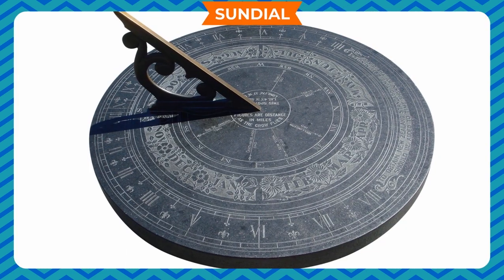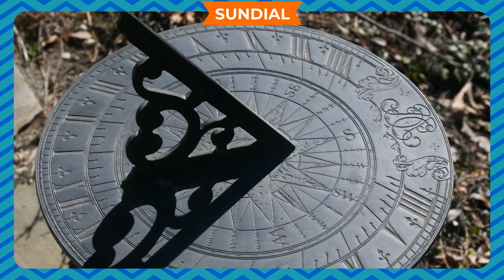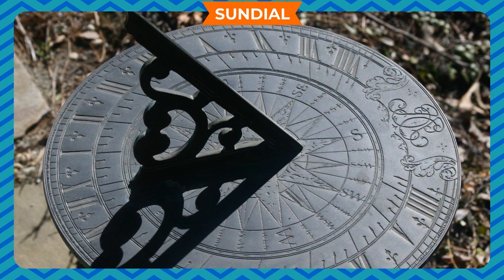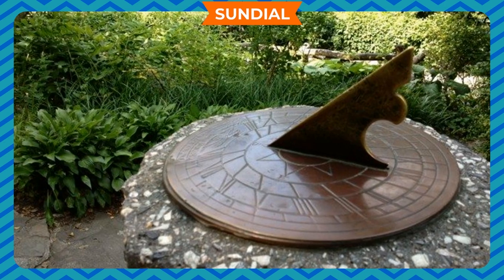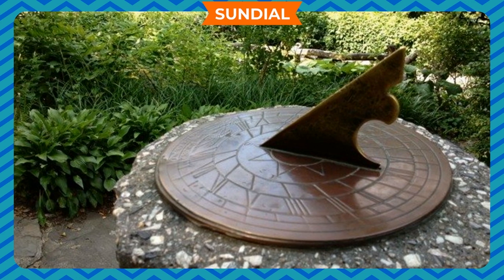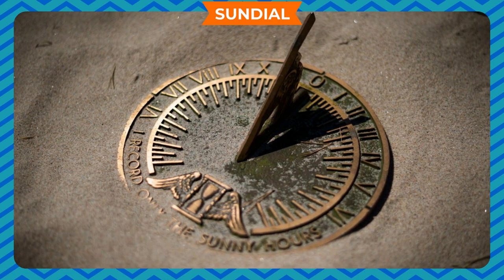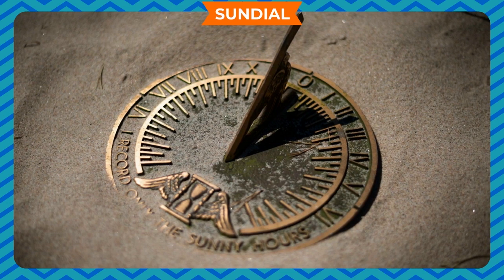Sundial: It is one of the primitive devices used to measure time. It is based on the fact that the shadow of an object changes its length and position with the position of the sun. The sundial consists of a piece of metallic triangular plate fixed vertically on a circular board in such a way that the plate casts a shadow on the board and the position of the shadow can be used to calculate the time.